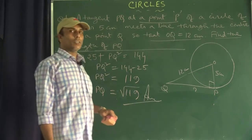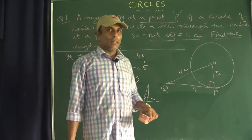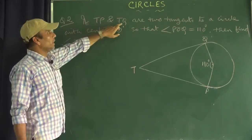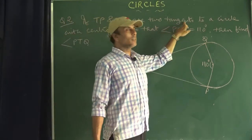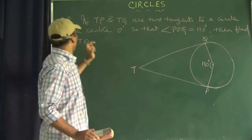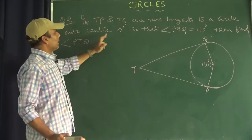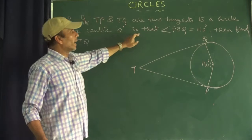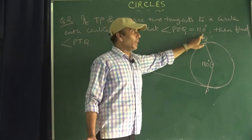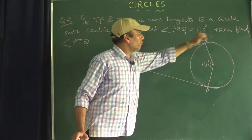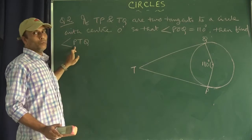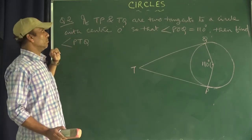Now I will take another question. TP and TQ are two tangents to a circle with centre O, such that angle POQ equals 110 degrees. Find angle PTQ.